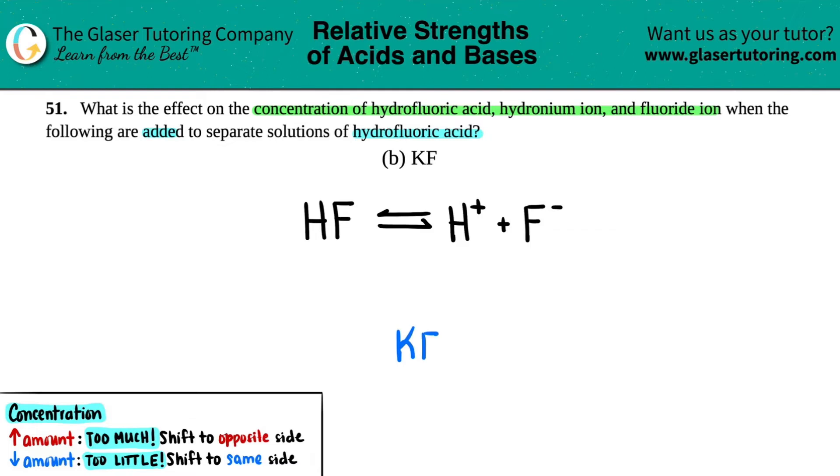I'm going to say, okay, I have KF. And what does this break down into? Well, if the split is here between potassium and fluorine, this would be K plus and F minus.